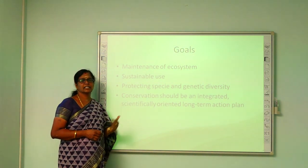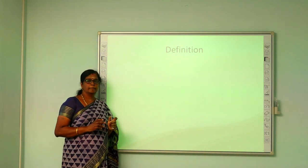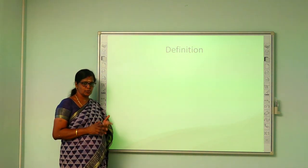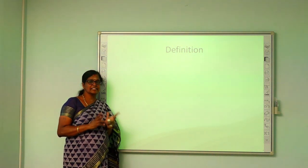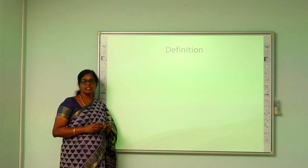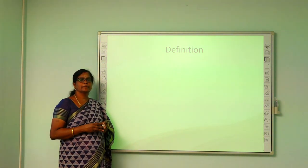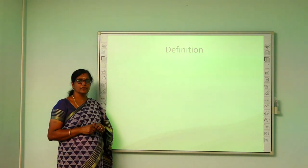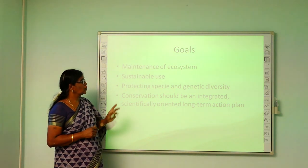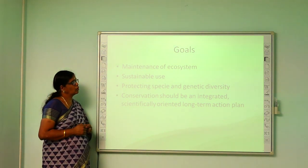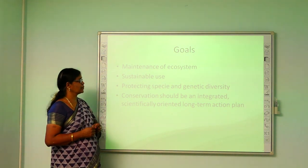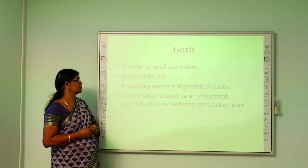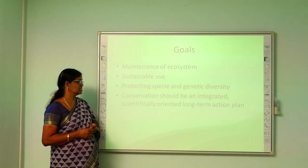We can define plant conservation as the maintenance and management of human use of biodiversity in such a way that it yields maximum protection and yield to the present generation while maintaining its potential to meet the needs of future generations. The goals of plant conservation are maintaining the ecosystem properly, sustainable use of the parts of the ecosystem, and protecting the species and genetic diversity.